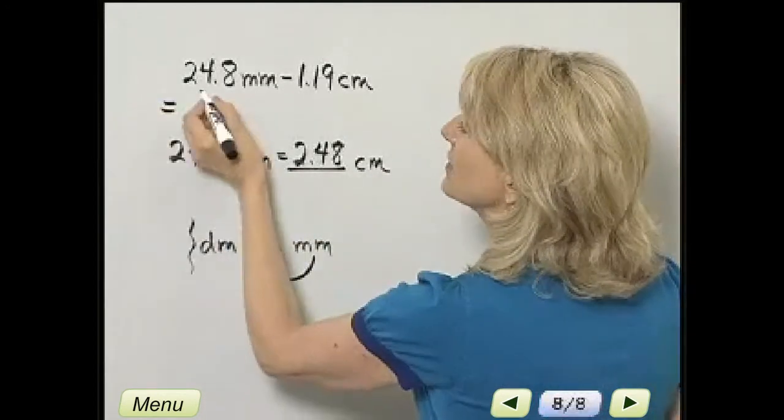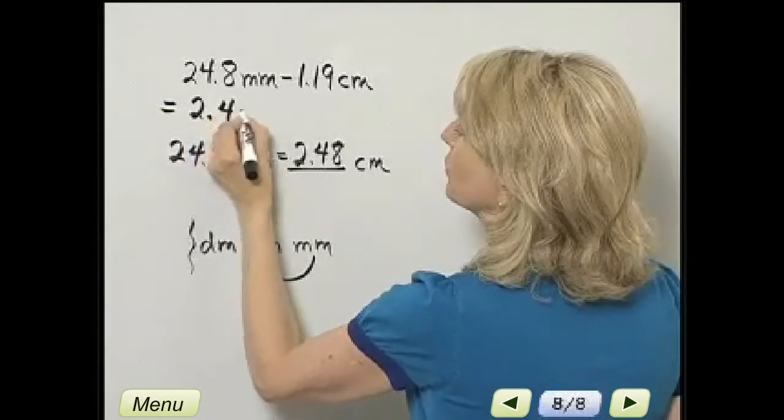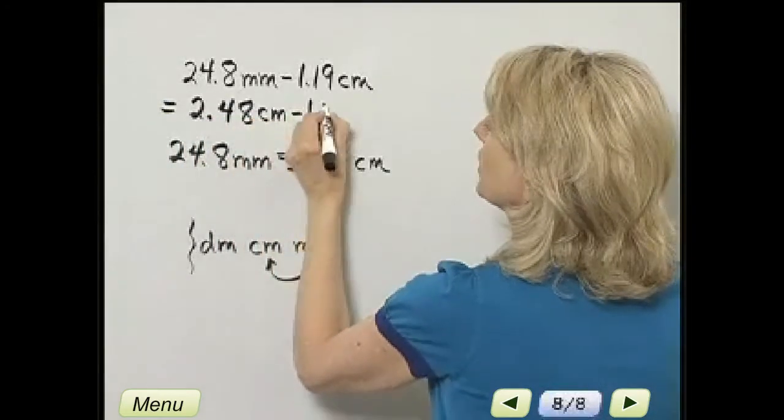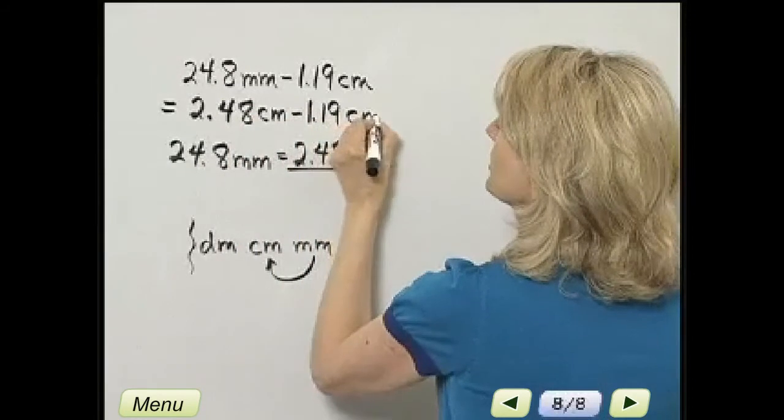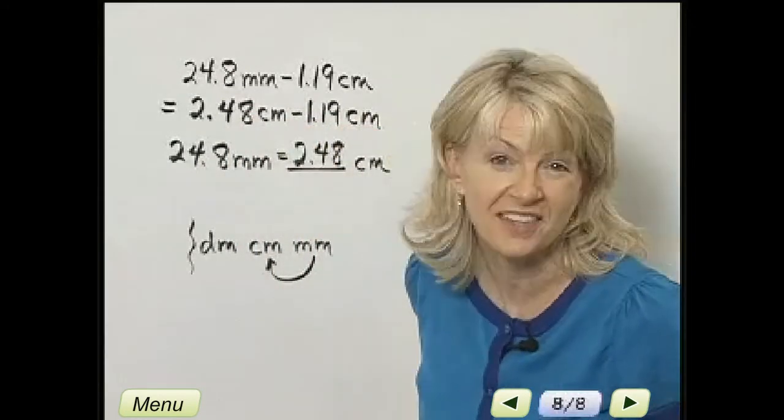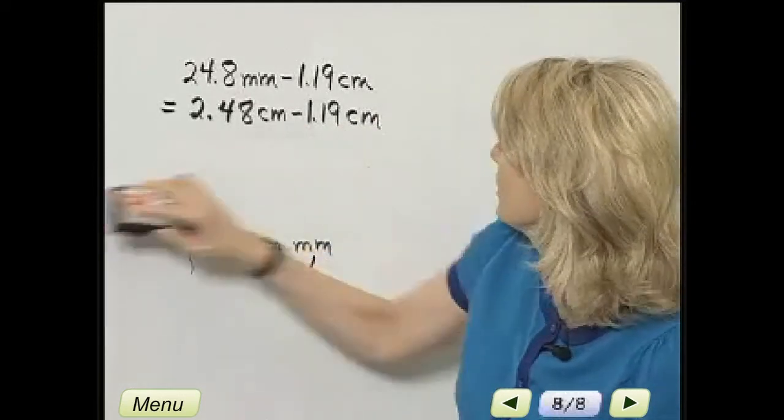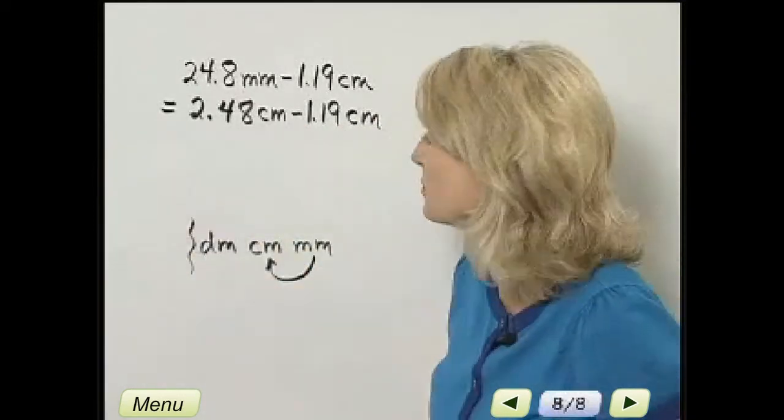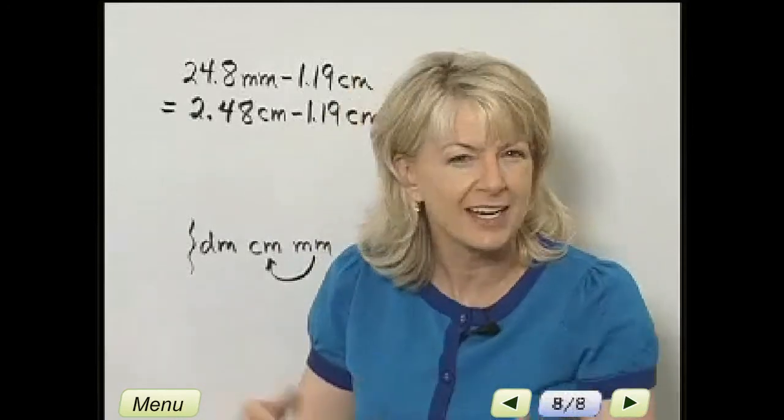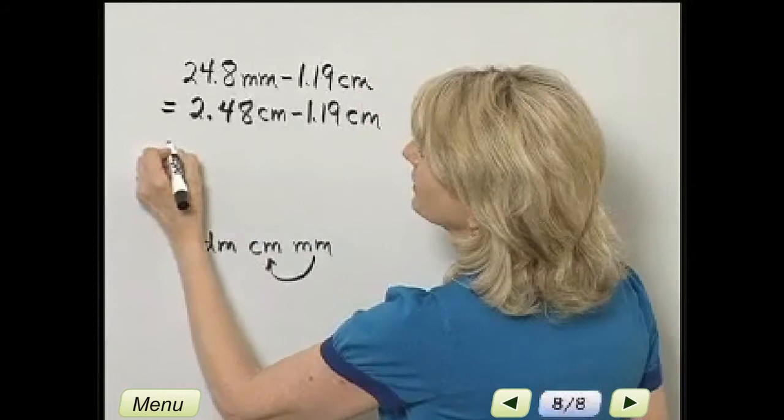And now, this is the same as 2 decimal 48 centimeters minus 1 and 19 hundredths centimeters. So now, your units are the same. Your units do need to be the same in order to perform your operations on them, unless you're just multiplying times 4 or dividing by 2, something like that. But certainly when adding or subtracting.